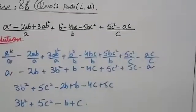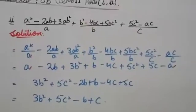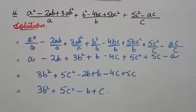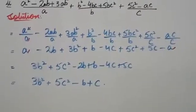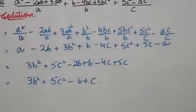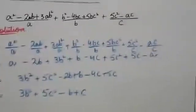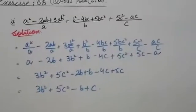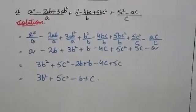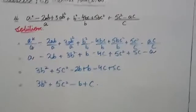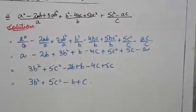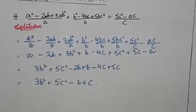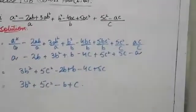You can see that the first term a has a positive sign and the last term a has a negative sign — opposite signs — so they cancel. The rest of the value is: minus 2b plus 3b² plus b minus 4c plus 5c² plus 5c. There are no other same terms with opposite signs to cancel, so we arrange them: 3b² plus 5c² minus 2b plus b minus 4c plus 5c.